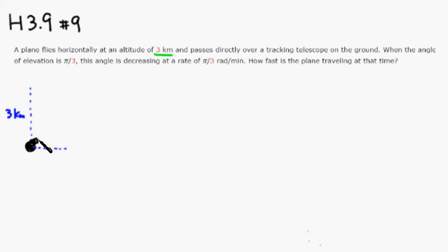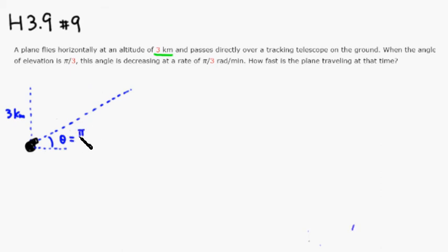Here is the angle of elevation. Looking at this angle from the ground, let's call it theta because it's changing. At this point, theta is π/3, and it's decreasing at the rate of π/3 radians per minute.